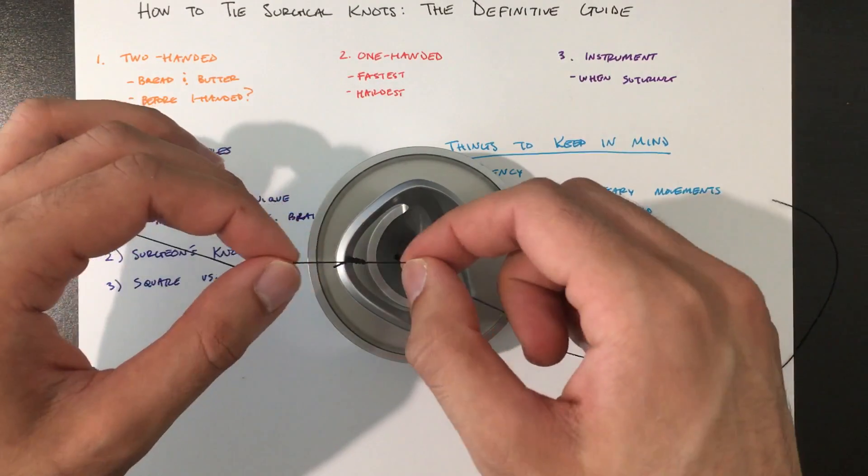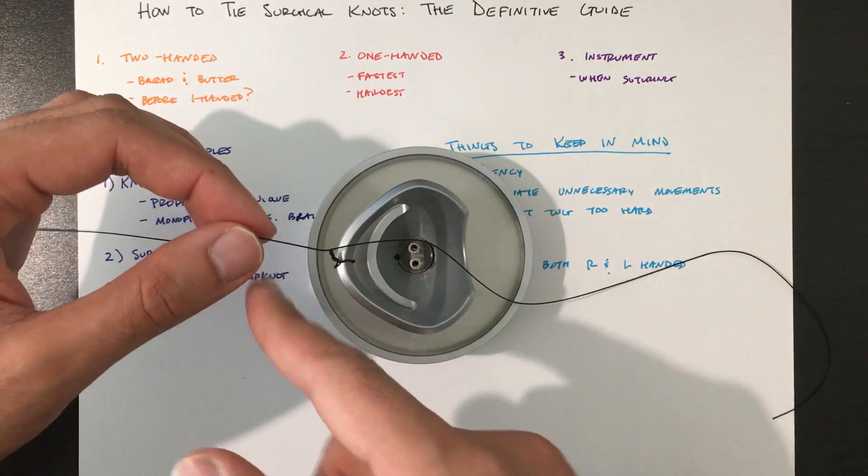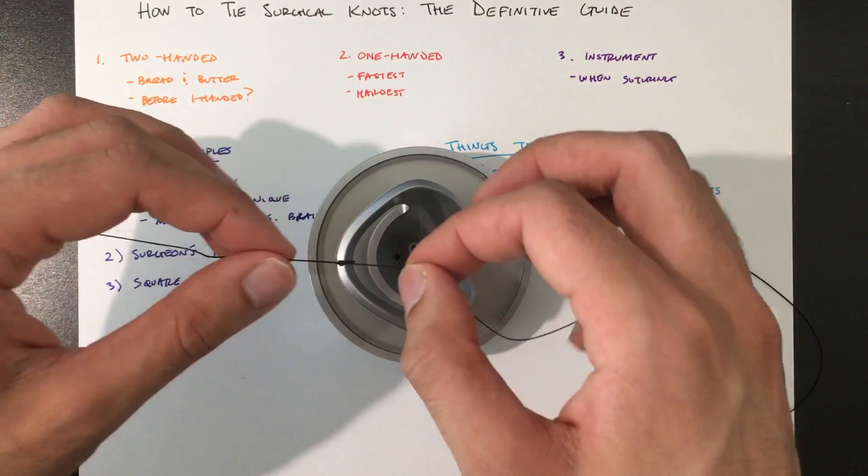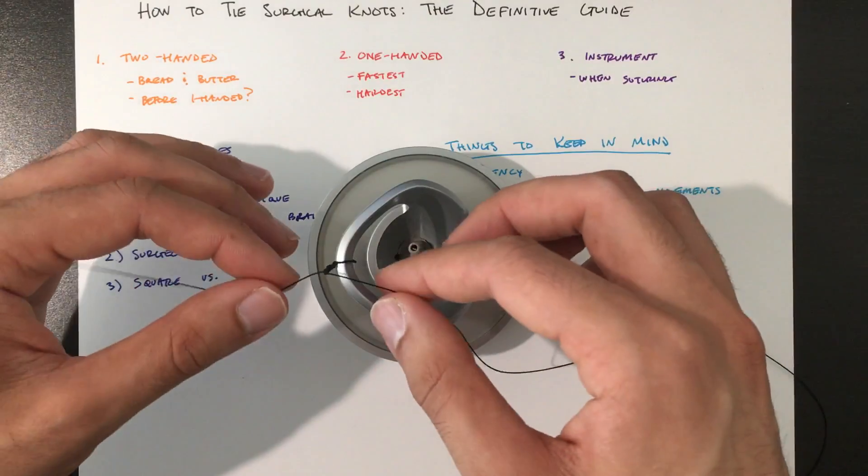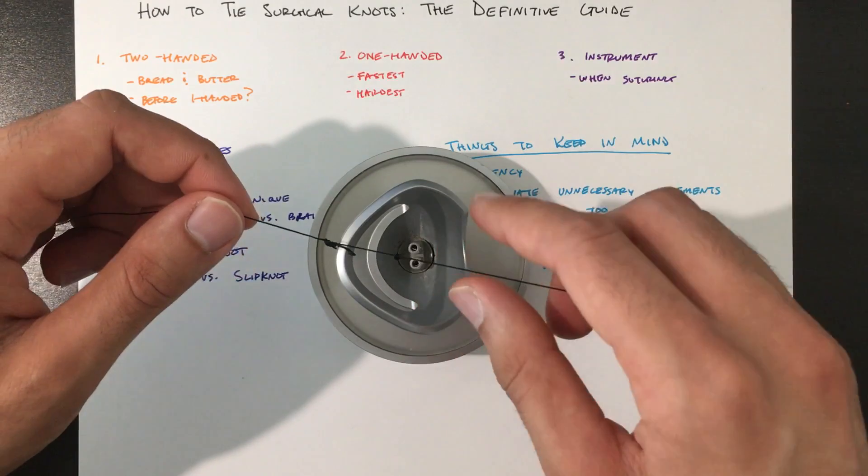So again, what I would do if this was a fresh suture I ran out, I would have these criss-crossed, just like I did for the two-handed. And there's two movements for the one-handed: there's the book and the gun. So we'll start off with the book.